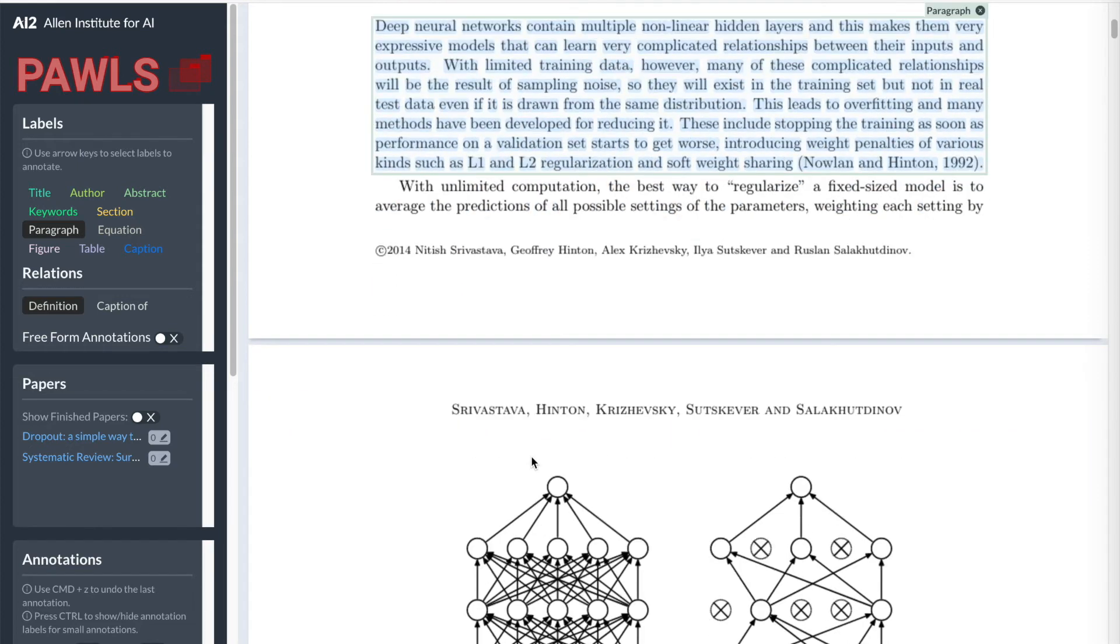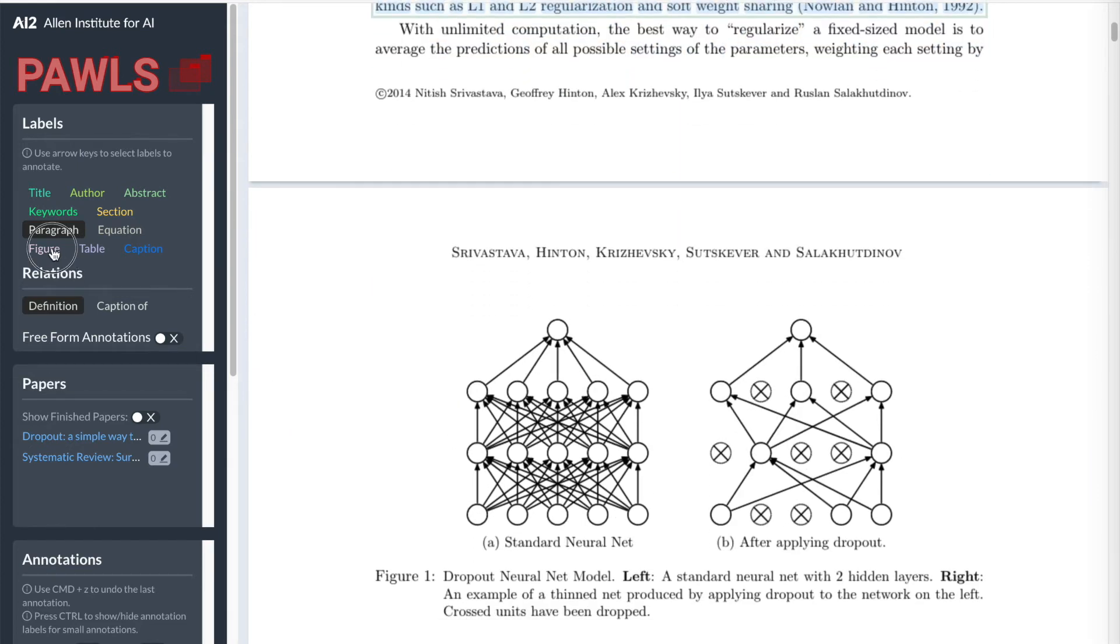When labeling non-textual regions like figures or tables, you can also create freeform annotations that are not bound by the block snapping function.